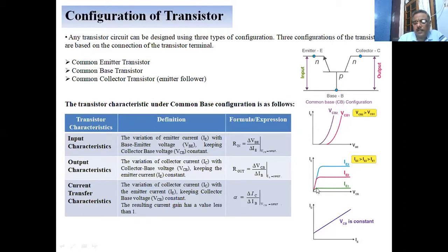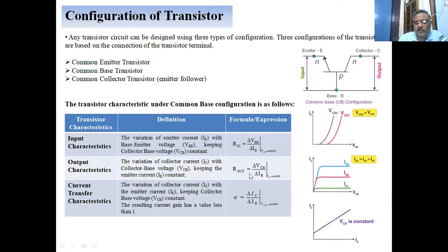The conduction starts gradually and the current becomes constant after a certain period. The third is the current transfer characteristic, which shows the variation of the collector current with the emitter current — the emitter current is the input and the collector current is the output. It is a graph between the input current and output current, showing a straight line with the collector-base voltage kept constant. The ratio of the two currents is defined as the current gain, which is an important quantity deciding the application of the particular transistor.